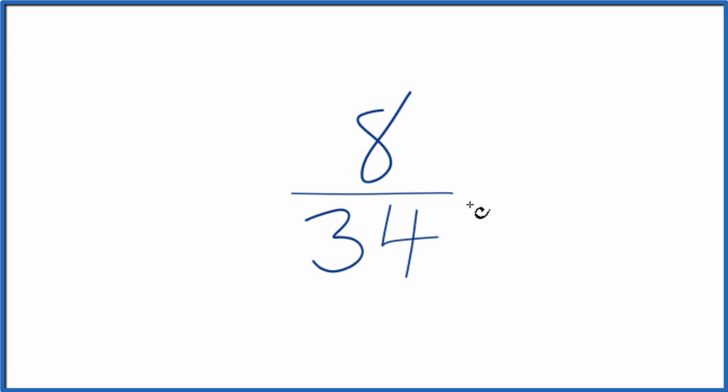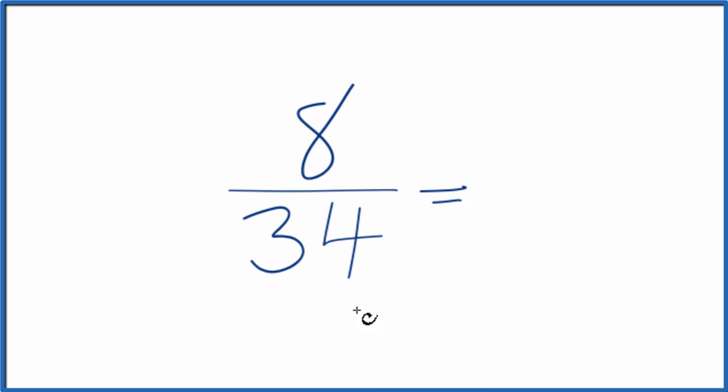So to do that we need to find a common factor, something that goes into 8 and 34. But it might be easiest, since these are both even, to divide both of them by 2.